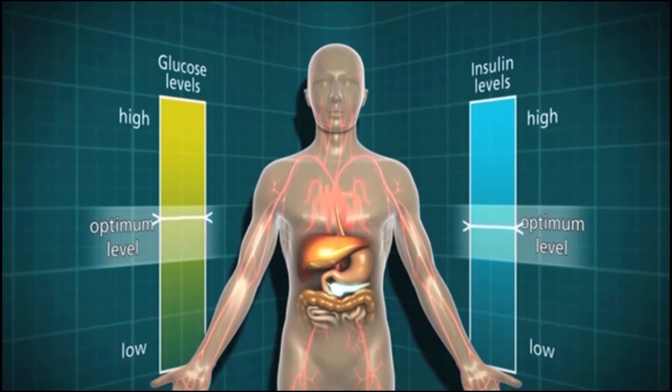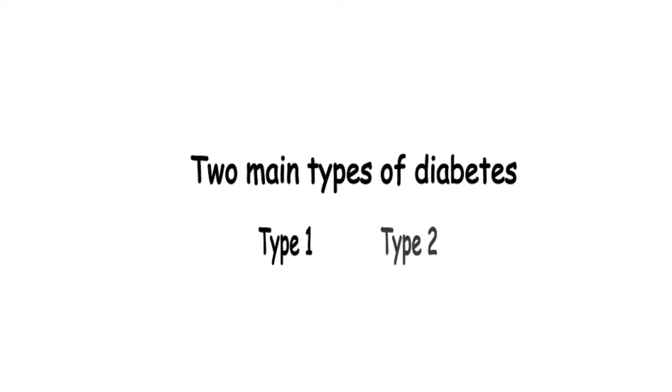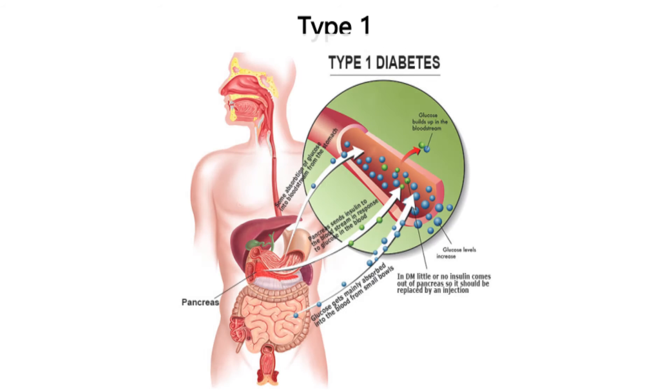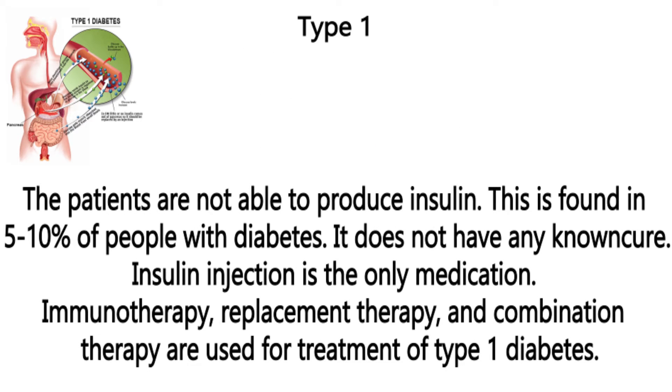High blood sugar level and lack of insulin leads to diabetes. There are two main types of diabetes namely type 1 and type 2. In type 1 diabetes the patients are not able to produce insulin. This is found in 5-10% of people with diabetes. It does not have any known cure. Insulin injection is the only medication.